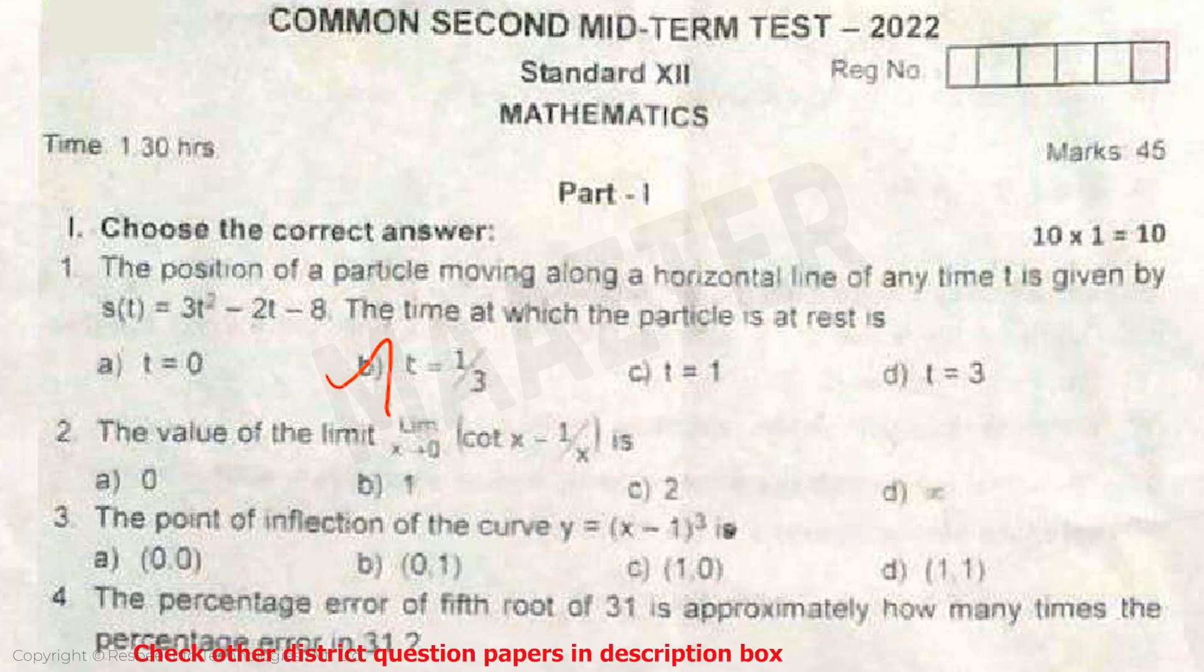Answer is option B. Question 2: The value of the limit as x tends to 0 of (cot x - 1/x) is... Answer is option A.